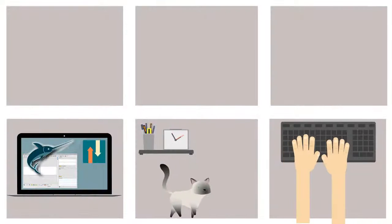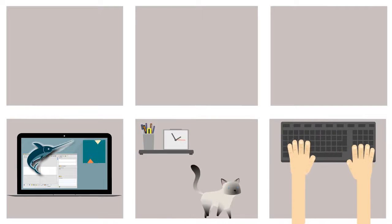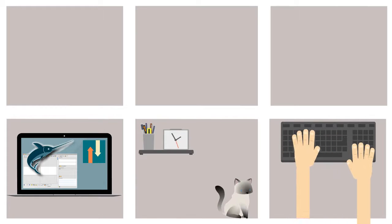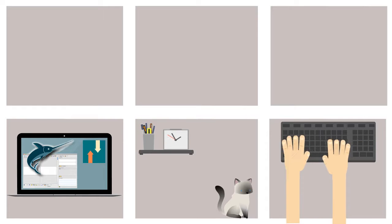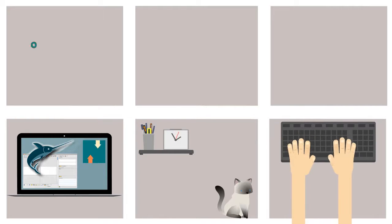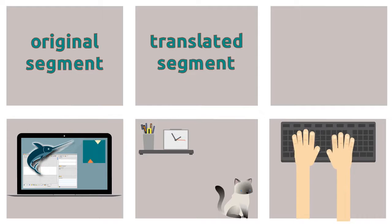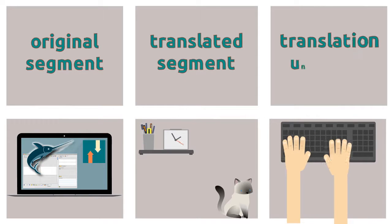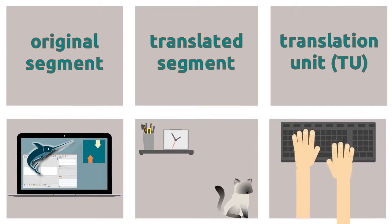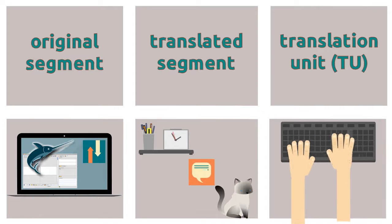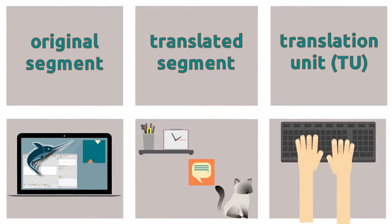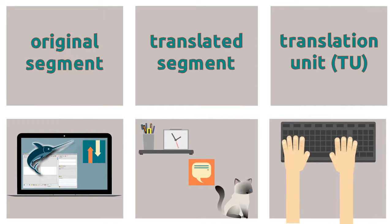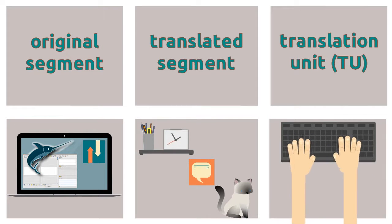Once you convert the original file into the format used by the CAT tool, the program will separate the sentences for you to enter the respective translations. The combination of an original segment and a translated segment is called a Translation Unit, or TU for short. And that's how your CAT will save your work into databases known as Translation Memories, or TMs, so you can reuse your work in the form of matches and repetitions.